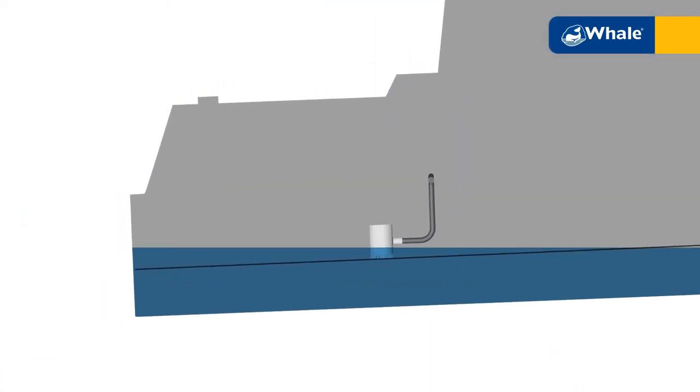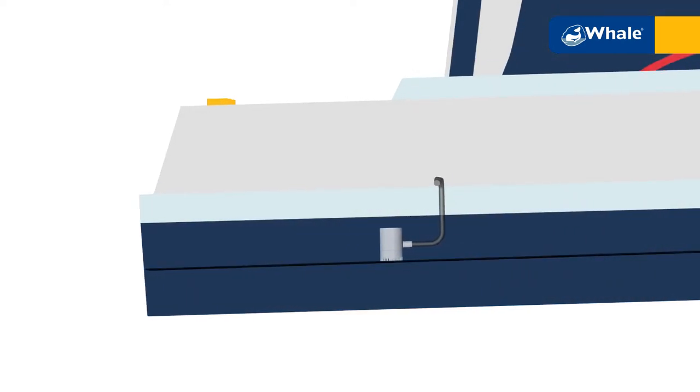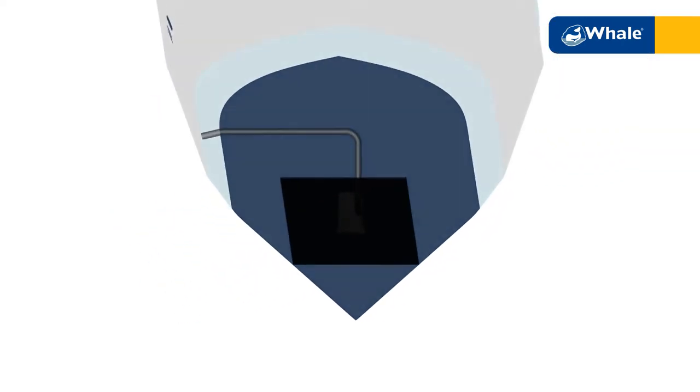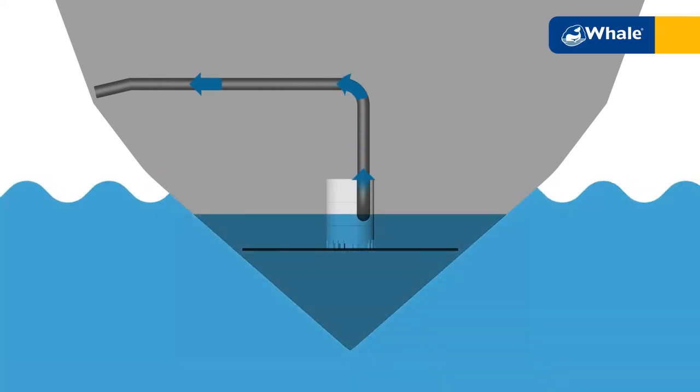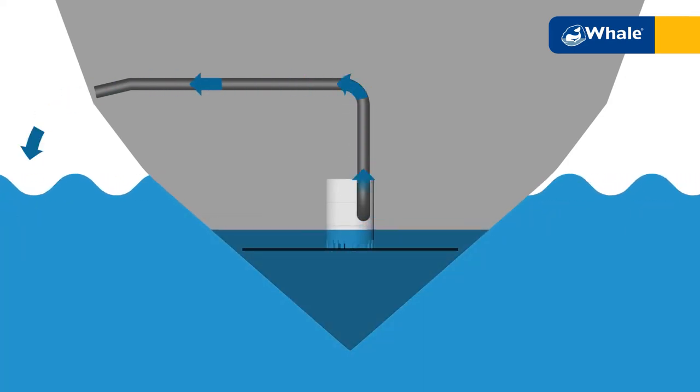However, many are large and bulky and so cannot reach the bottom of the bilge or fit into small confined areas where bilge water can gather. The result? They can leave an unacceptable depth of water in the bilge that cannot be pumped out.